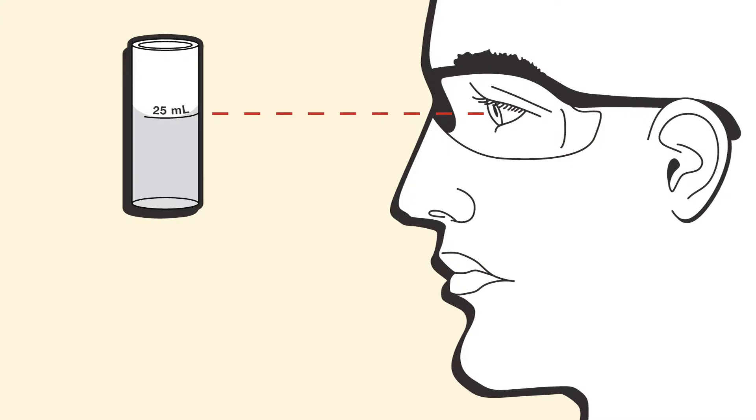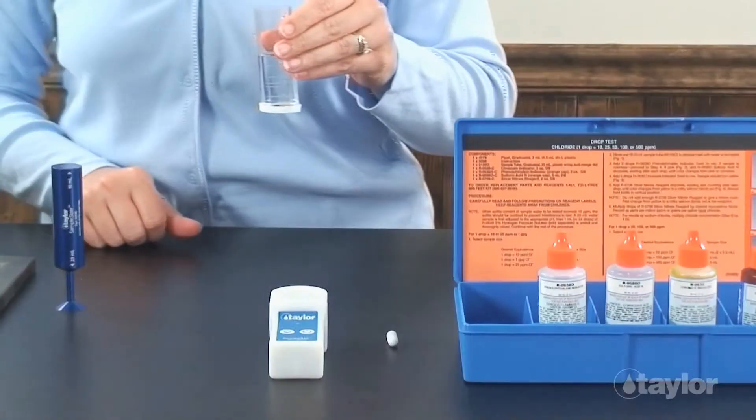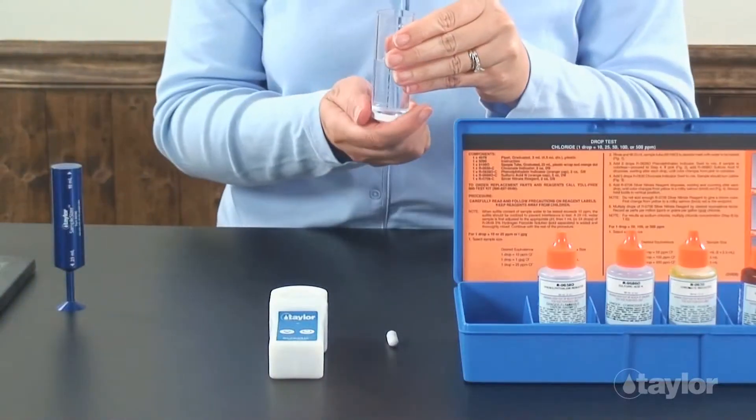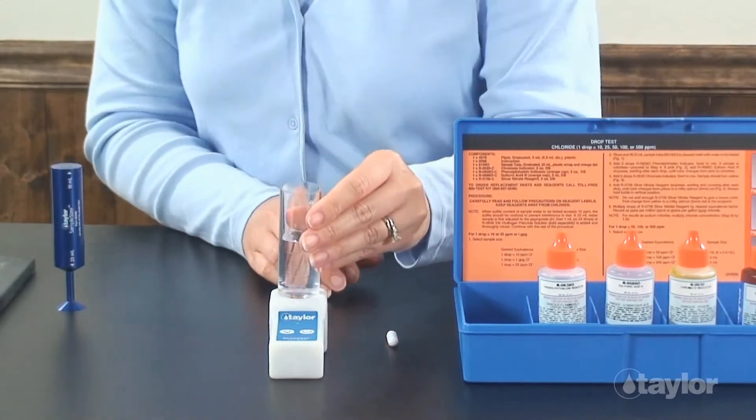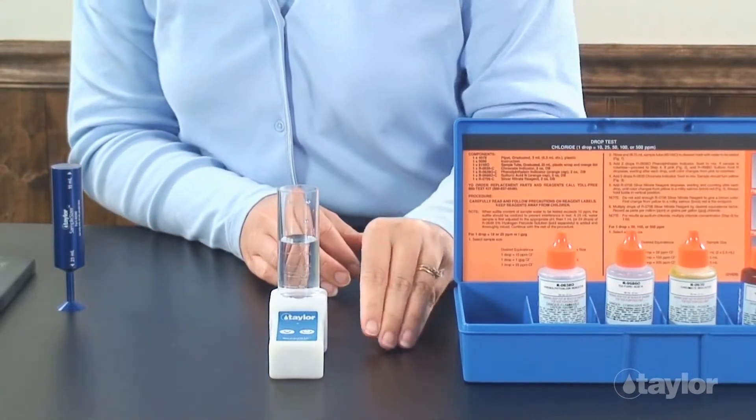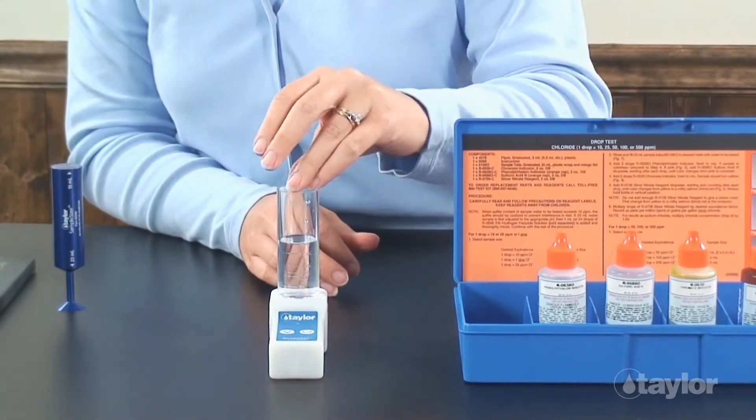Note: for results in grains per gallon, fill the sample tube to the 14.6 ml mark.